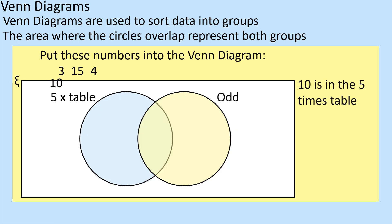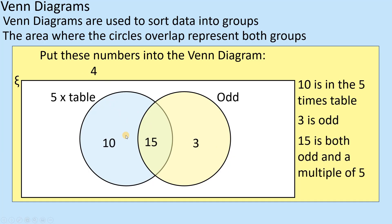So I'm going to put the numbers in. 10 is going to go into the five times table — it's certainly not odd. 3 is going to go into the odd circle, because it's odd. 15 is both in the five times table and odd, so it goes into the middle. And then 4 — well, that doesn't go into any of those, so it sits outside. So that's essentially a Venn diagram.